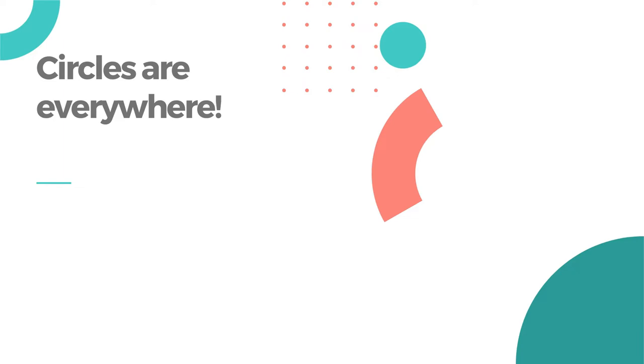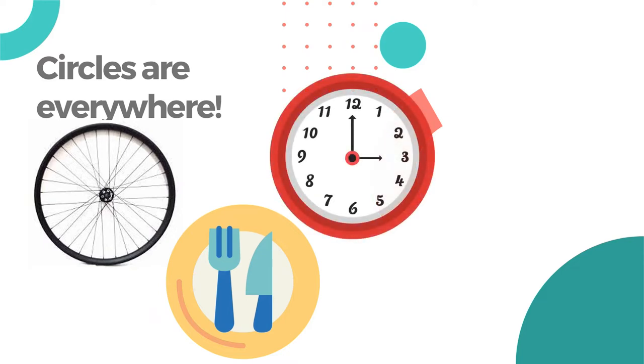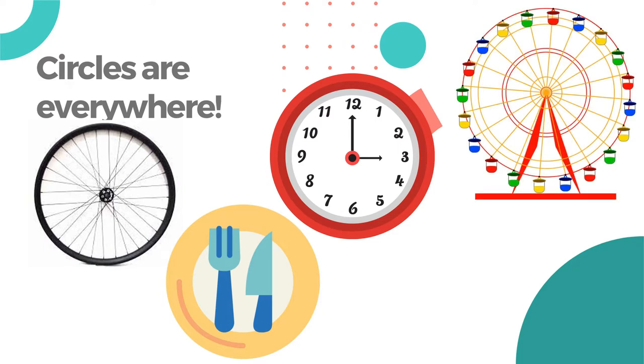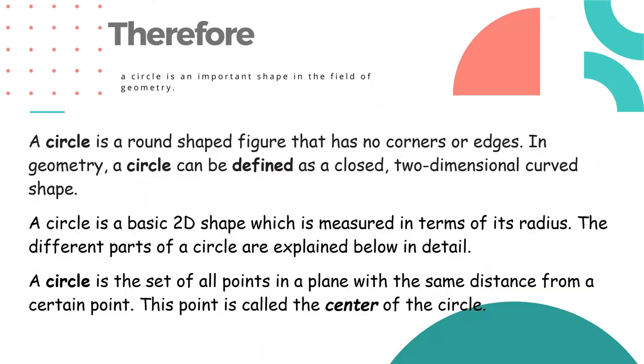Circles are everywhere. So what are some examples of circles that we see around us? Okay, that is the bicycle wheel, our dinner plate, our wall clock, Ferris wheel, and coins. Those are just some examples of circles that we see around us. Therefore, a circle is an important shape in the field of geometry.